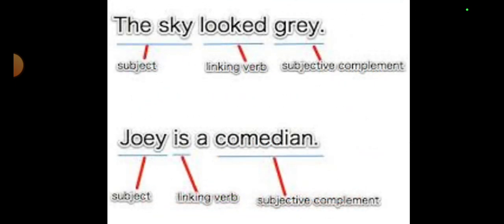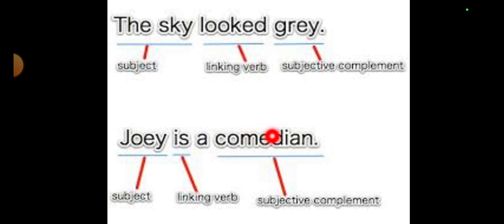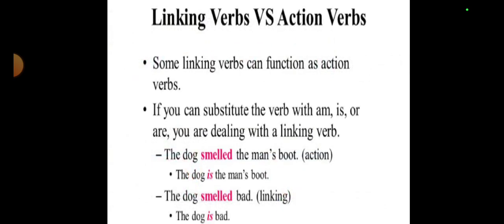Let us look at more examples to make the concept clearer. 'The sky looked grey' — here 'sky' is the subject and 'grey' is the complement; 'looked' shows no action, so it is a linking verb. 'Joy is a comedian' — again subject linked with a complement by 'is,' which is a linking verb. Remember, linking verbs can be different forms of 'be,' or they can be verbs whose forms end in -ed, etc.